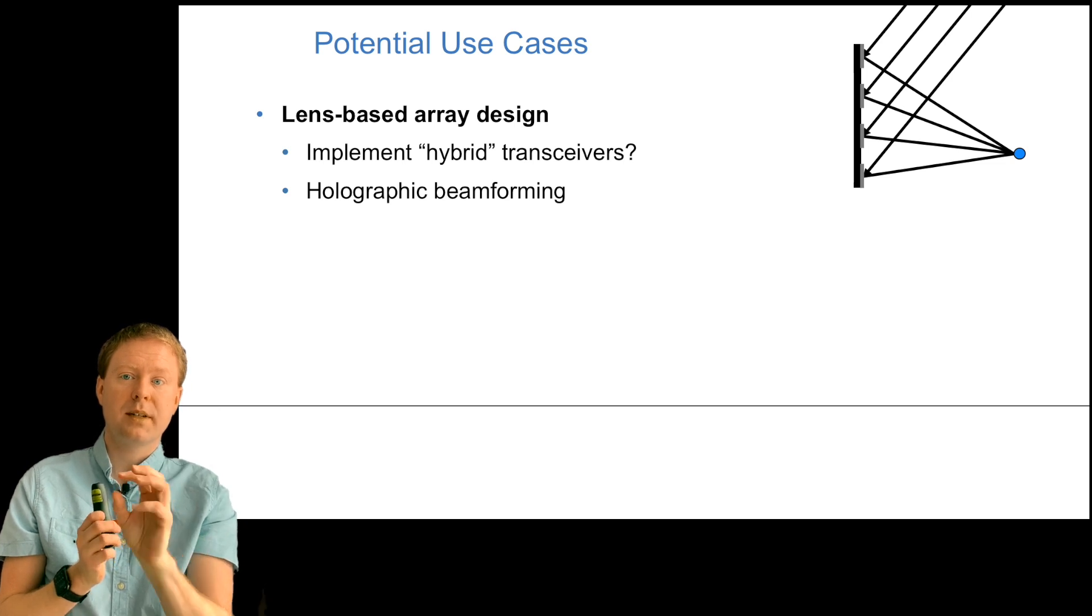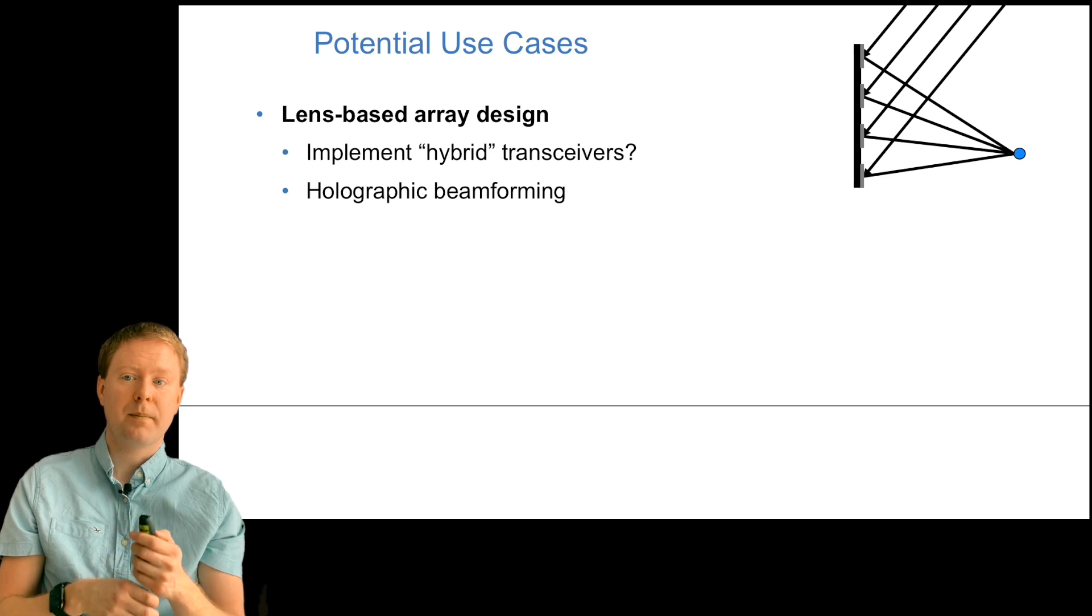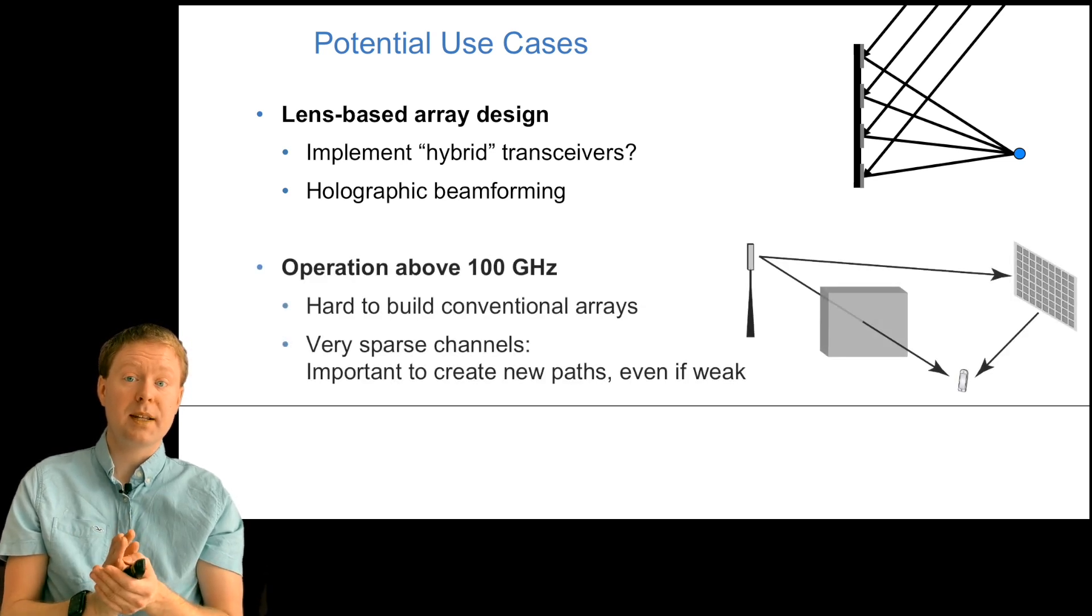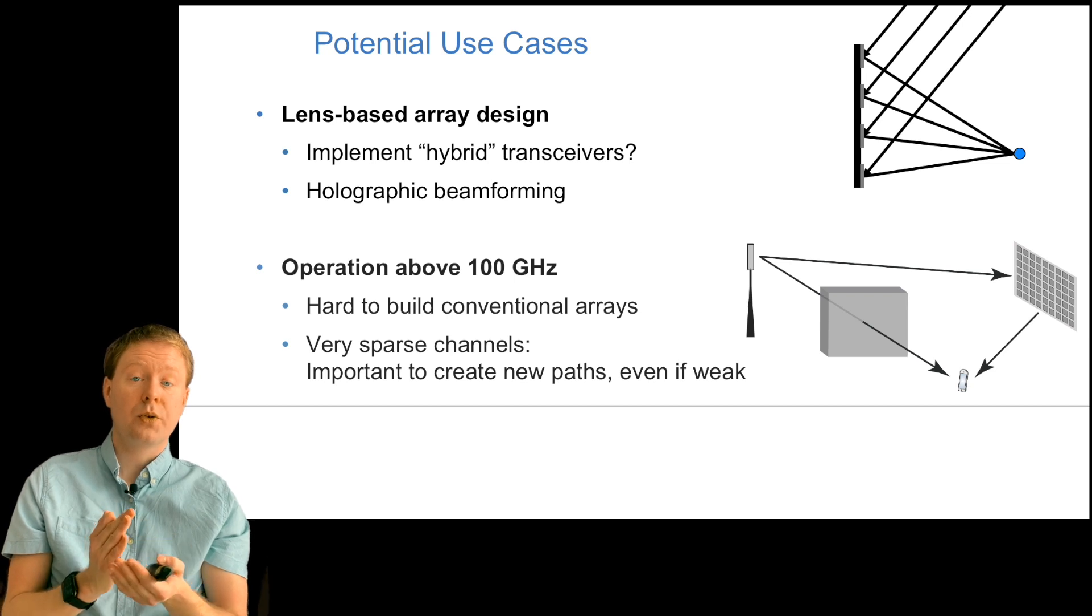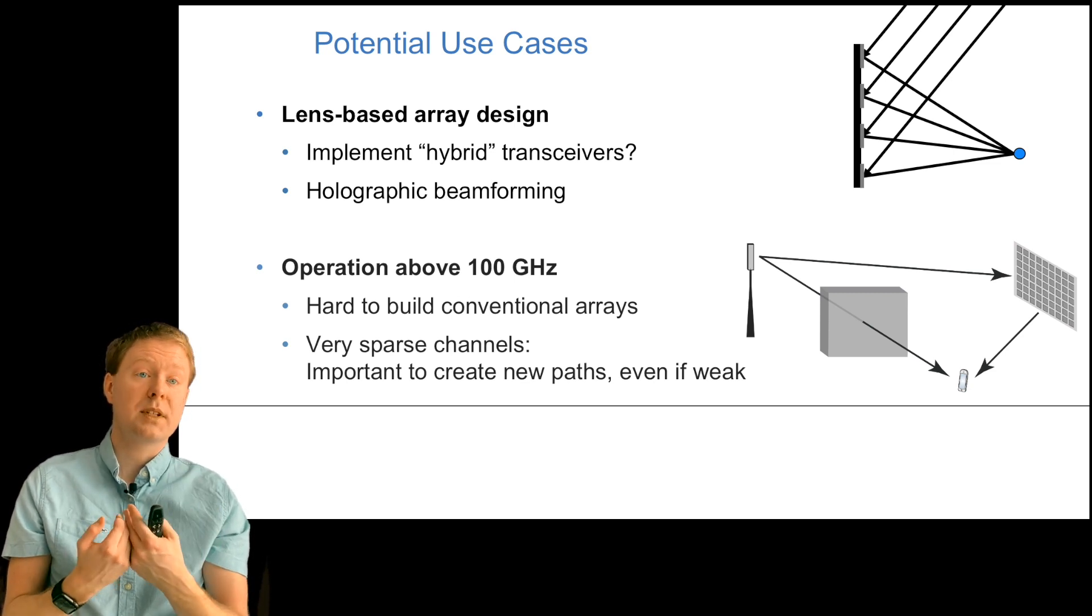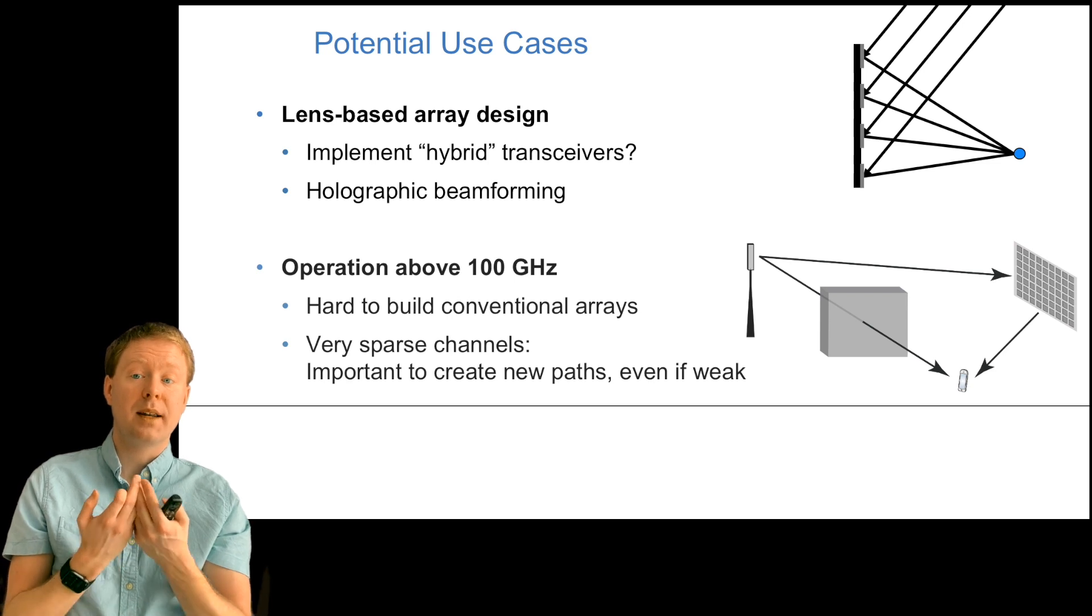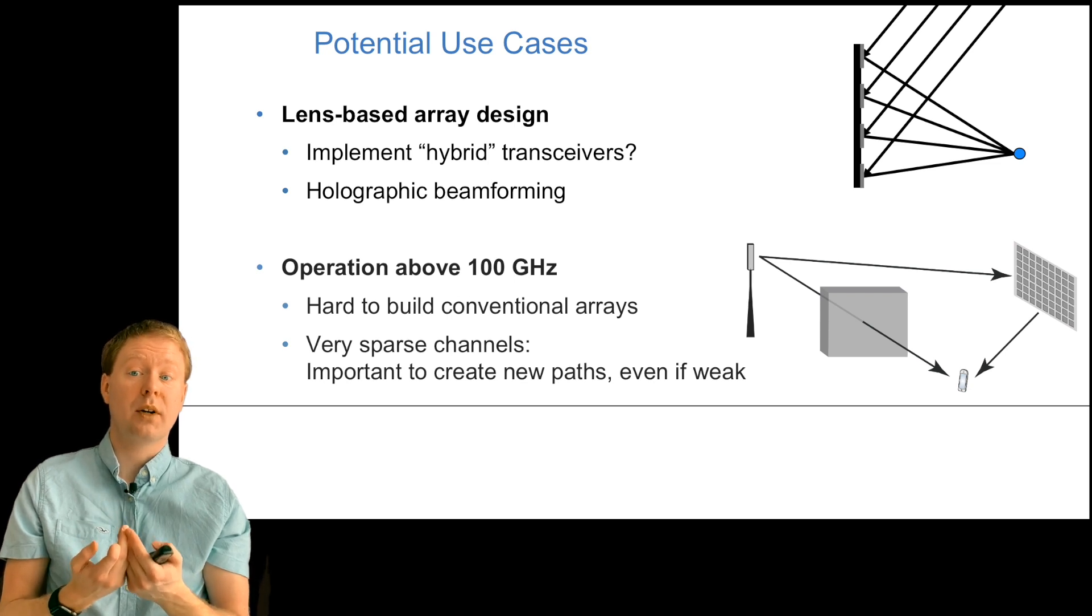Another operation that I believe in is that when we move above 100 gigahertz, it might be very hard to build conventional digital arrays. In particular, also the channels become sparser and sparser. If our direct signal is blocked, it's important to create new propagation paths. Since there's very little scattering in those cases naturally, by putting up a surface like this, we can provide an additional path. It might be a weak one, but it might be also what we need in order to make the system work at all.